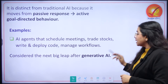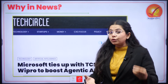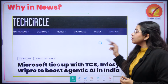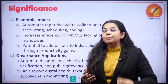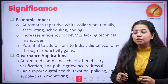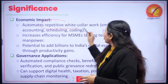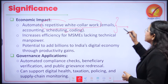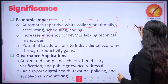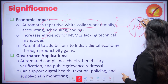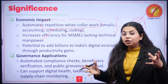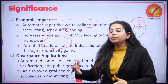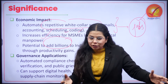This has been in news because Microsoft has tied up with TCS, Infosys and Wipro to boost agentic AI in India. Agentic AI is of extreme significance because of the economic impact it holds — automation of repetitive white-collar work such as emails, accounting, scheduling, coding increases efficiency. At the same time, there is still a question of how jobs will be taken over by AI. There is potential that agentic AI can add billions to India's digital economy through productivity gains, but the question of employment and harm to human jobs still remains.